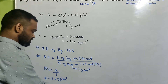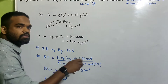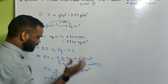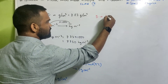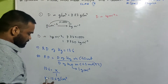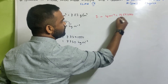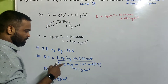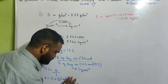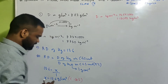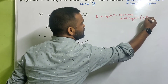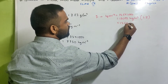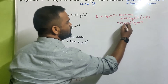Now we know how to change g/cm³ to kg/m³ — we just did that sum — you multiply by thousand. So density in kg per meter cube is 13.6 multiplied by 1000, which is 13,600 kg/m³. So density of mercury in CGS unit is 13.6 g/cm³, and in SI unit it is 13.6 × 10³ kg/m³. You can write it like that also.